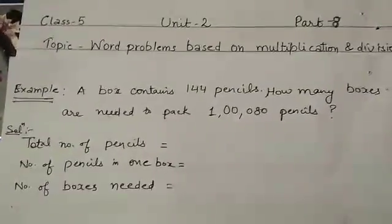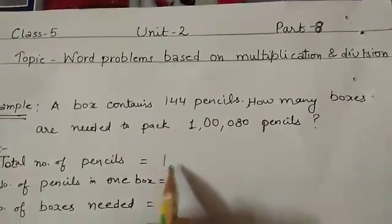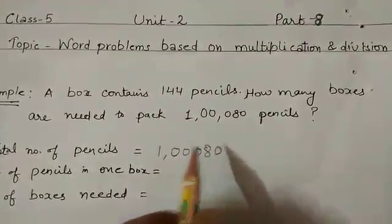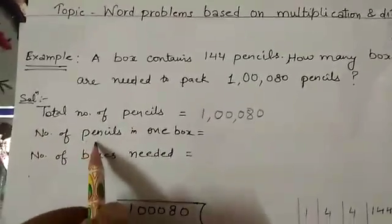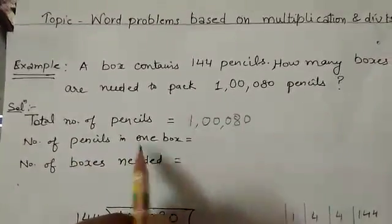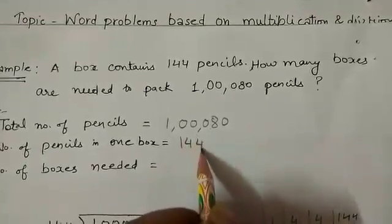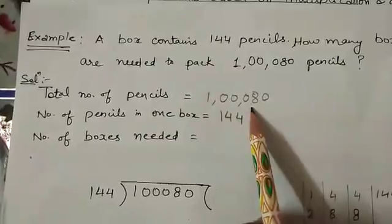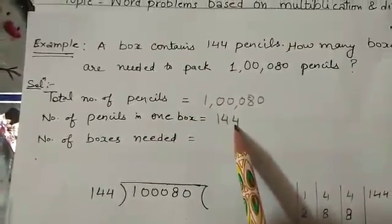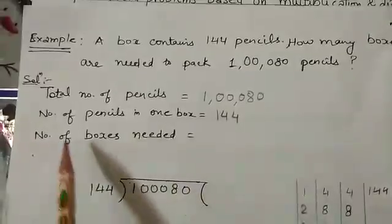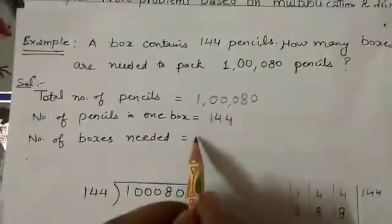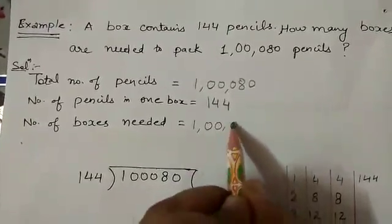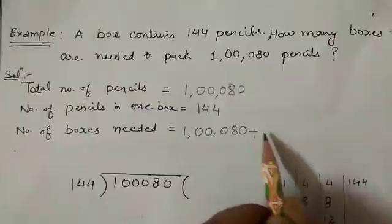So, what should we do? We will write total number of pencils, then number of pencils in one box, that is equal to 144. If I divide this total number of pencils by the pencils in one box, I will get the number of boxes needed. So, I will divide 1,00,080 by 144.